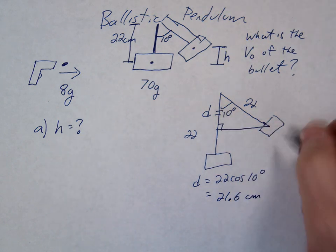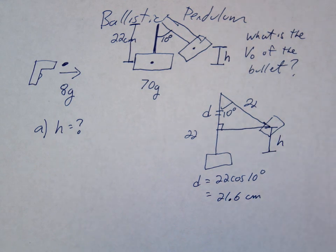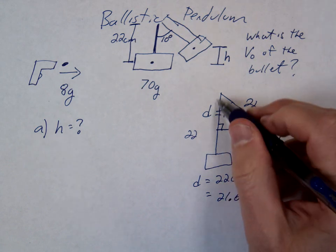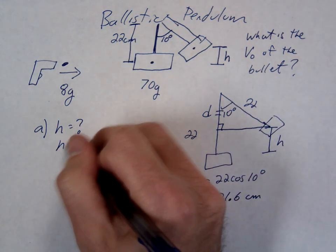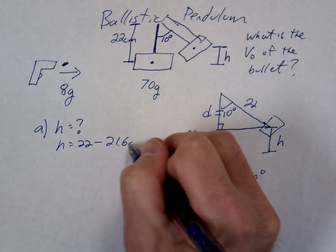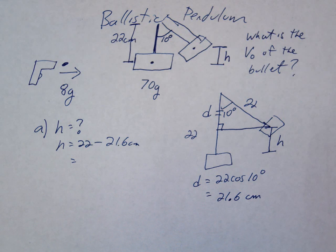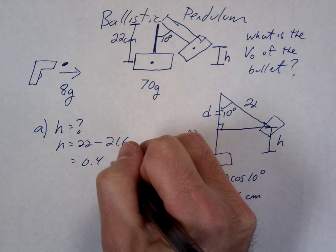Okay, so if that's 21.6, how are we going to find the h here? So this h, the whole thing is 22, so h is going to be equal to 22 minus 21.6. So that's going to be 0.4 centimeters.